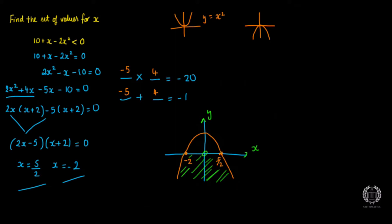Looking at x = 5/2: as the curve goes below zero on that side, the x values are increasing, so x > 5/2 is one part of the solution. Looking at x = −2: as the curve goes below zero on that side, the x values are decreasing, so x < −2 is the other part. The principle is the same as positive inequalities — just remember the graph shape flips.